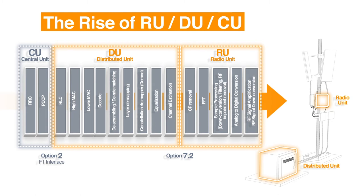The idea is for the RU to be super low power, low cost, and light, such that it can be mounted on a pole or a roof. The DU, on the other hand, does most of the heavy lifting on the PHY functions, and therefore costs more and consumes more power compared to the RU. By virtualizing baseband functions, a DU can now be connected to multiple RUs for achieving high parallelism. One of the more popular split options is split 7.2.